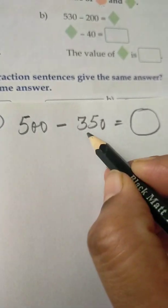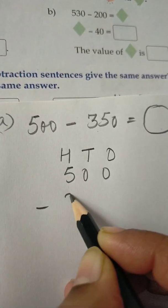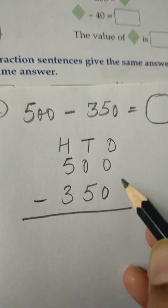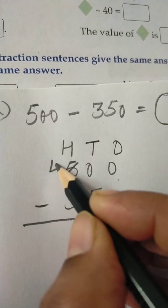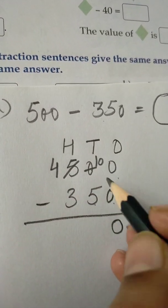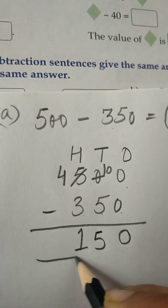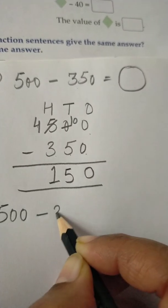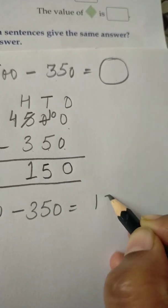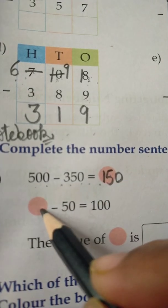Ones, tens, hundreds — 500 minus 350. 0 minus 0 is 0. Here 0 minus 5 is not possible, so we take one borrow from here — it becomes 10. 10 minus 5 is 5, and 4 minus 3 is 1. So we got 150. We will write 500 minus 350 equals 150. In the orange color box we write 150.